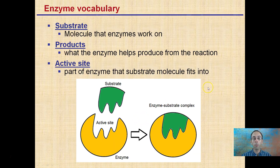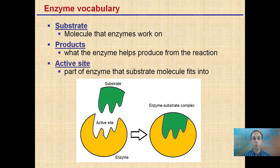Some key vocabulary when working with enzymes: substrates are the molecules the enzyme works on; the end product is what the enzyme helps produce at the end of the reaction; and the active site is a very specific shape that allows a very specific substrate to bind to it. The active site will be different for every enzyme — one enzyme cannot bind to many different substrates, only to the same type of substrate.